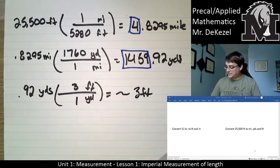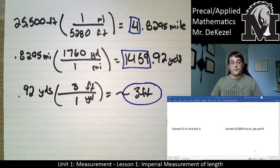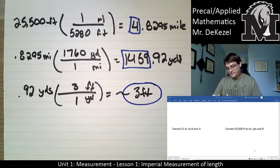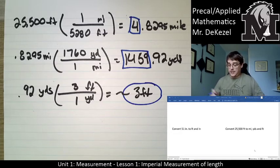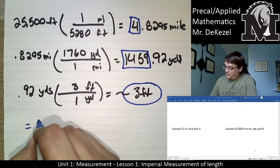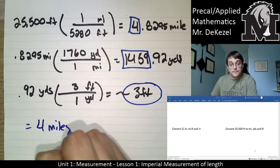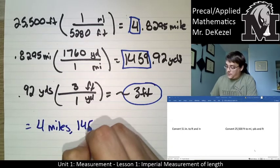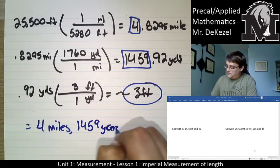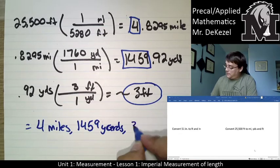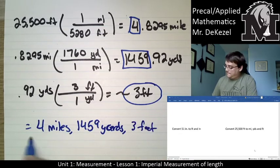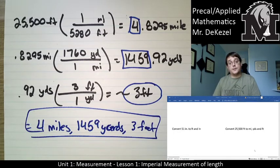So now we have all our values. We can say that 25,500 feet is equal to 4 miles, 1,459 yards, and 3 feet.